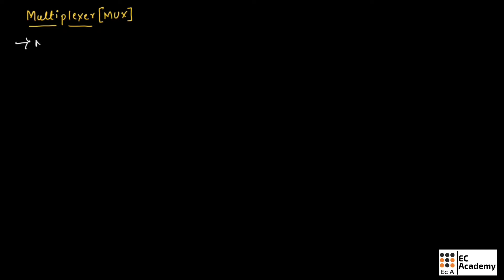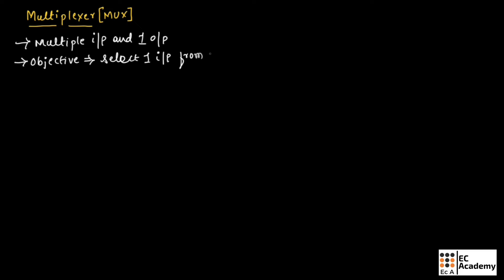Multiplexer consists of multiple inputs and one output. The objective of multiplexer is to select one input from available 2 to the power of n inputs. The multiplexer should select only one input, and this one input will appear at the output of the multiplexer.